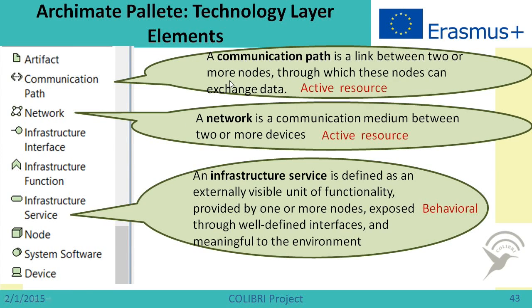At the technology layer we also have communication paths, which are links between two or more nodes through which nodes can exchange data — this is an active resource. We also have a network, which is a communication medium between two or more devices, also an active resource. Finally, there are infrastructure services, which show the functionality that the infrastructure provides for the application layer — this is a behavioral element.